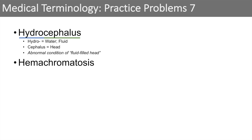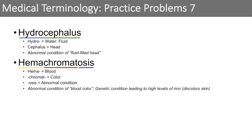The next word we're going to look at is hemochromatosis. Hema or heme means blood. Chromato or chromatic means color. And osis means abnormal condition. So hemochromatosis is an abnormal condition of blood color. Hemochromatosis is actually a genetic condition where individuals have high or very high levels of iron. In some cases, the high amounts of iron can actually discolor the skin, causing a bronzing effect — which is why we call it hemochromatosis.